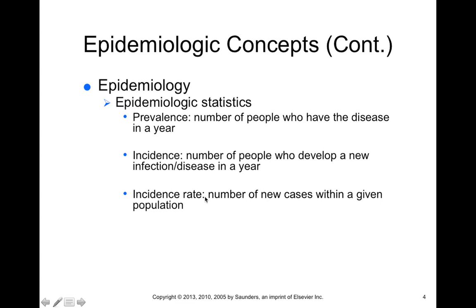Incidence rate is the number of new cases within a given population. With the population of the U.S., the incidence rate would be about 50,000 new infections of HIV every year.